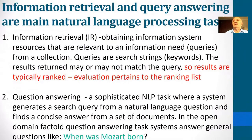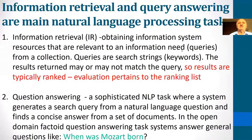Information retrieval and query answering are main natural language processing tasks. Information retrieval pertains to obtaining information resources that are relevant to an information need from a collection. Queries are search strings or keywords. The results returned may or may not match the query, so results are typically ranked. An evaluation pertains to the ranking list. Query answering is a sophisticated NLP task where a system generates a search query from a natural language question and finds a precise answer from a set of documents.